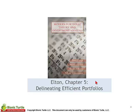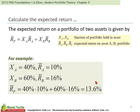Let's start with Elton Chapter 5, Delineating Efficient Portfolios. We're asked to calculate the expected return. This is absolutely a key ingredient in part 1 — we absolutely need to know how to do this. And further, there will be several question types which use this as a component, it's so fundamental.